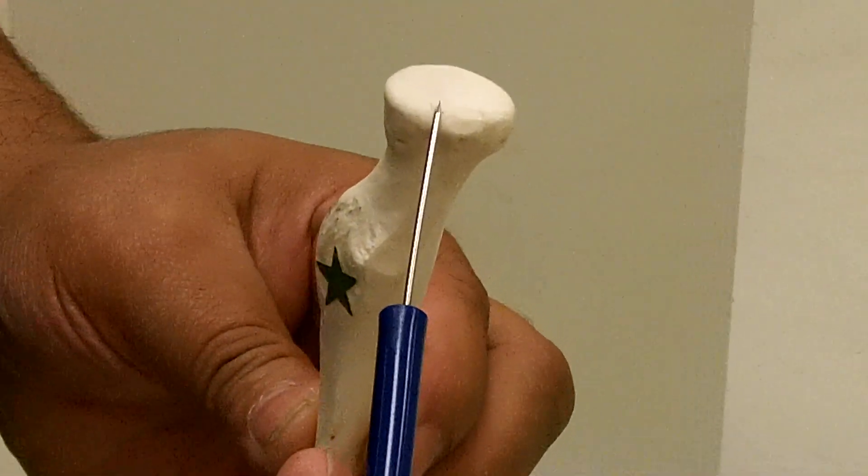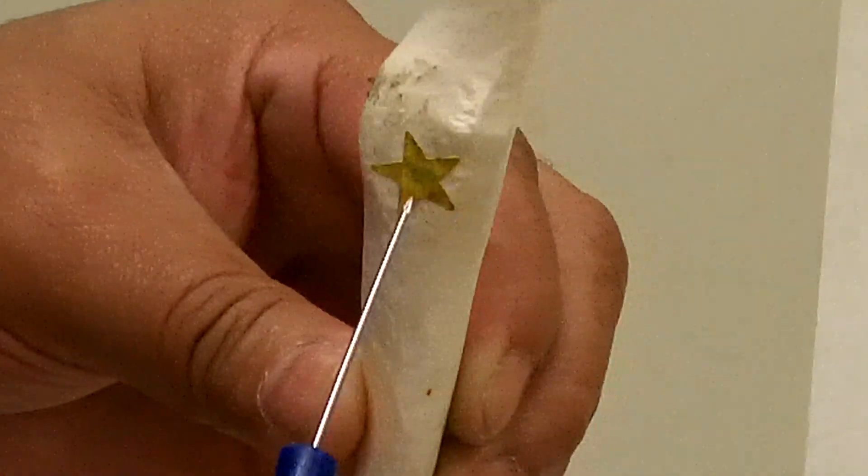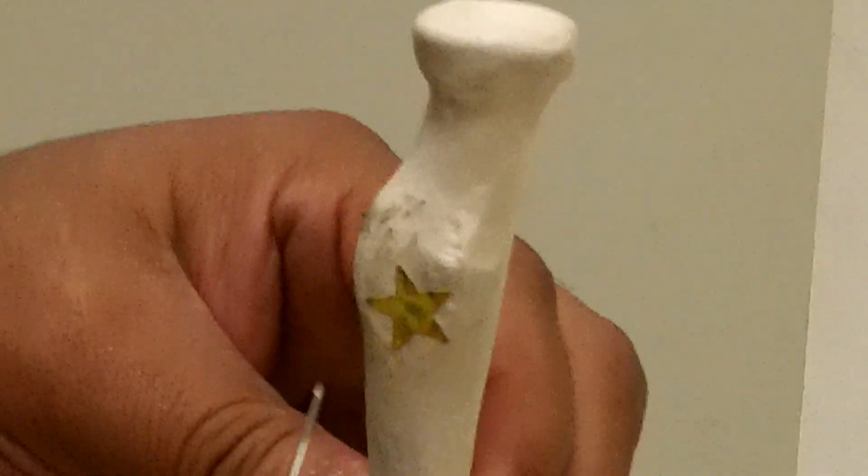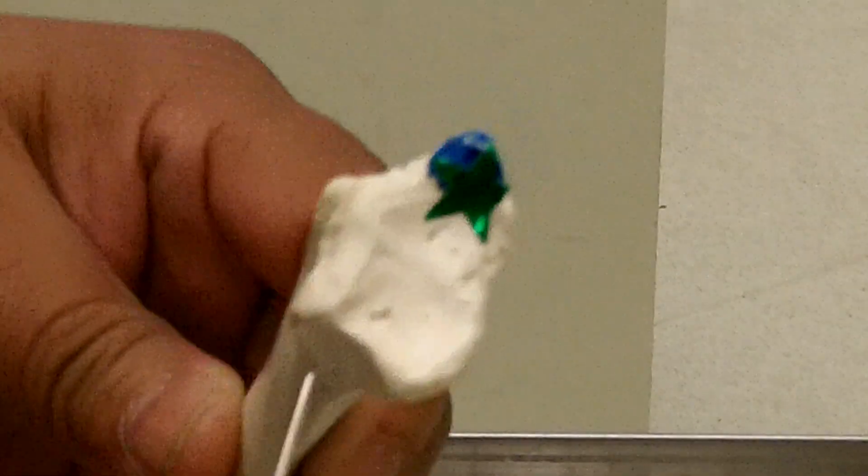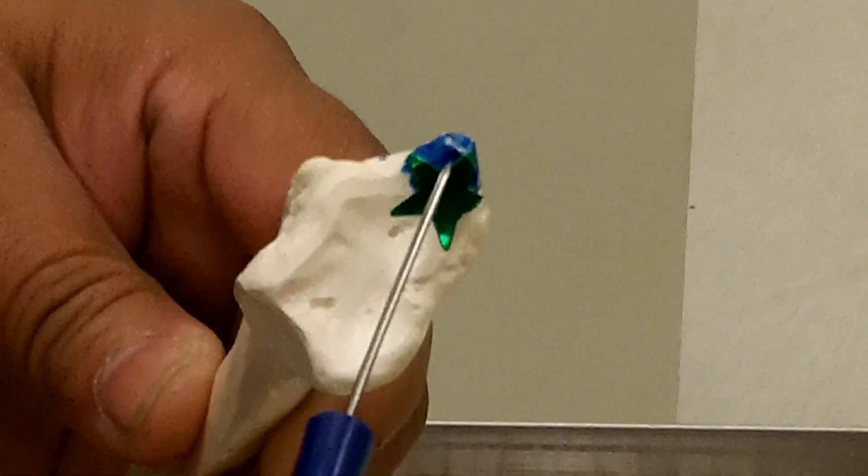Here's the head of the radius, the neck of the radius, the radial tuberosity. Down here we have the ulnar notch and the styloid process of the radius.